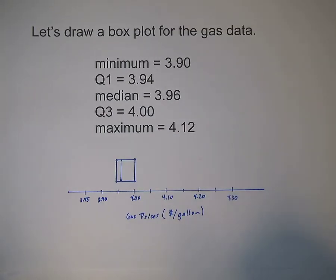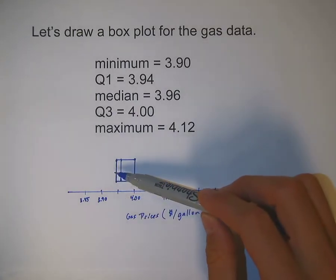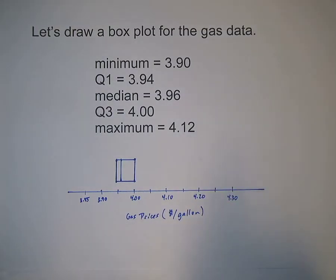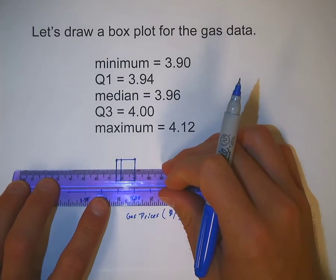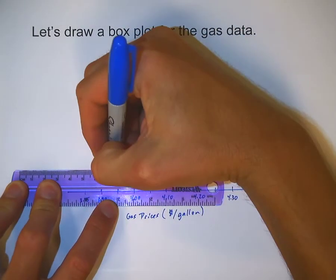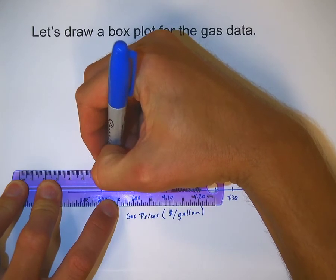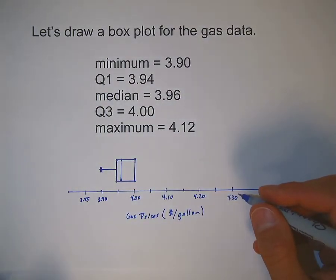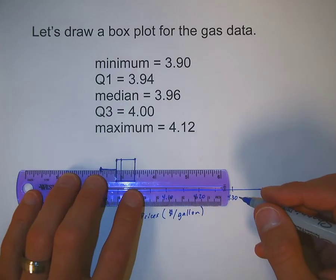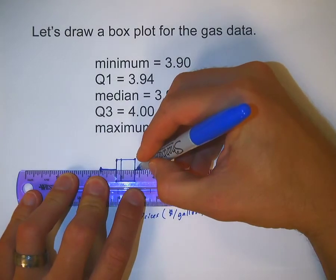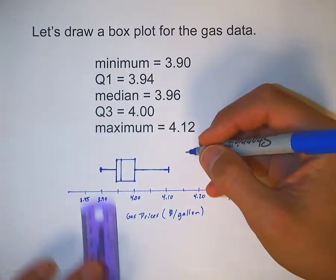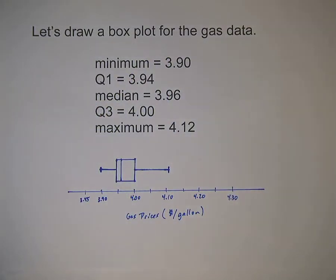Now I need two whiskers. I need a whisker going from Q1 down to the minimum, and a whisker going from Q3 out to the maximum. Let's do the lower whisker first — that's going to go out to $3.90. I like to draw it coming right out of the middle of the box, and I'll put a little hash mark at the end at the minimum of $3.90. And now my upper whisker needs to go out all the way to $4.12, so that would be a little past $4.10, and again I'll make a little hash mark there to represent the maximum. So that is my box and whisker plot for the gas data.